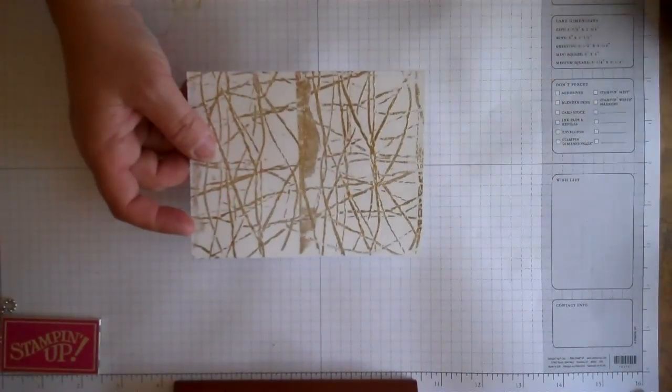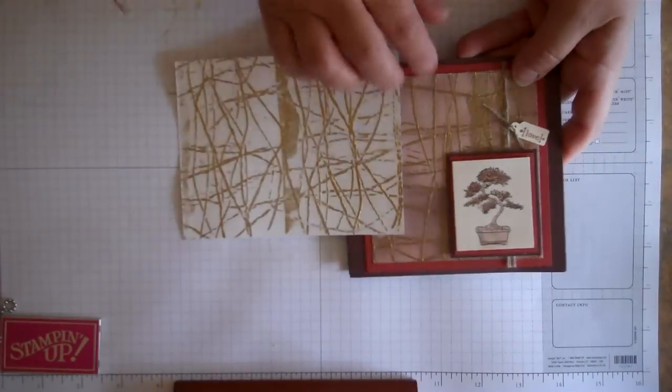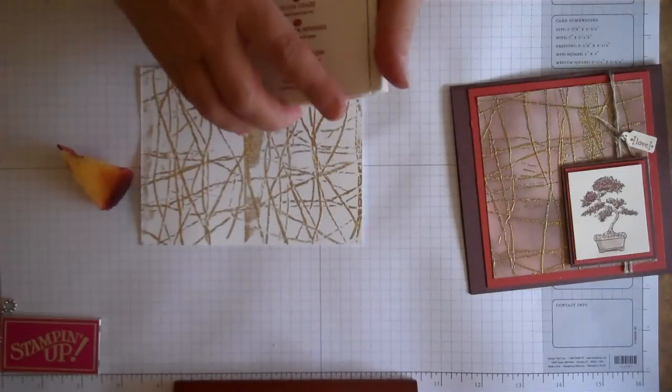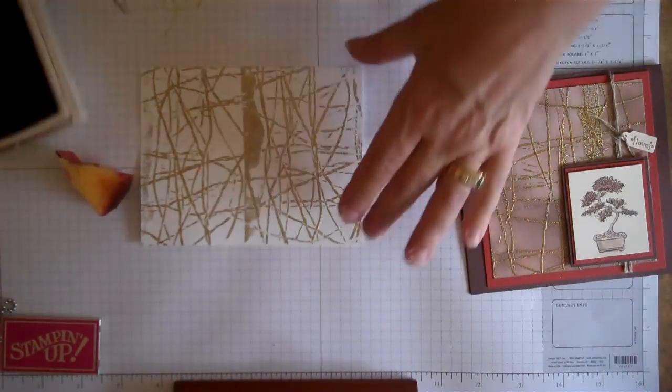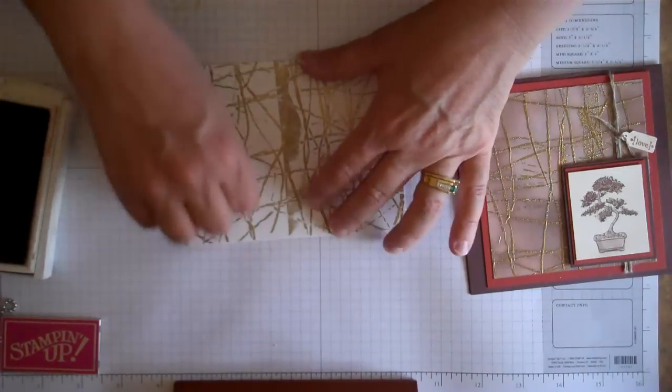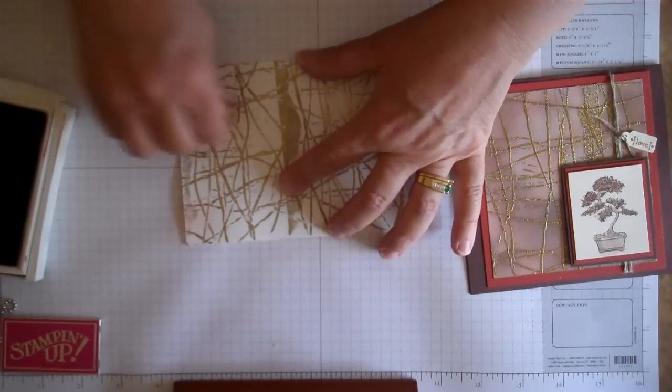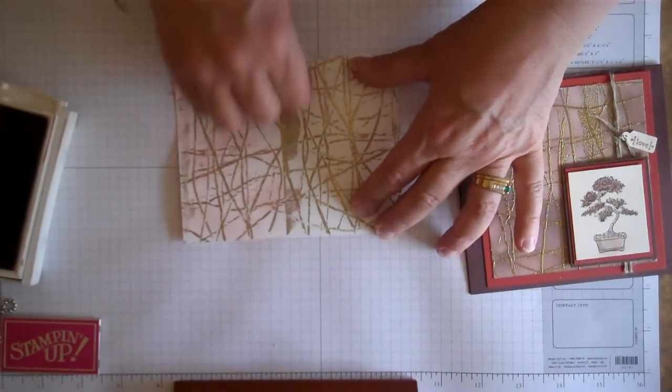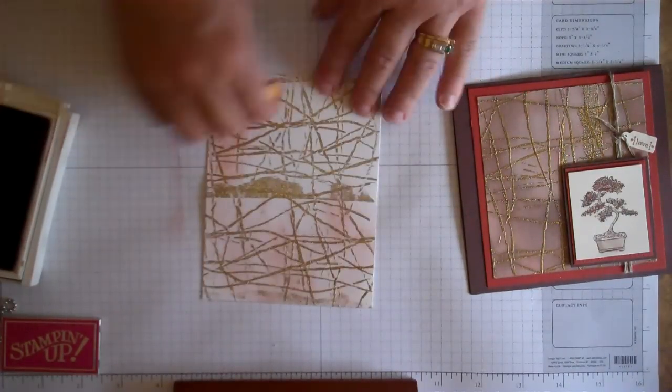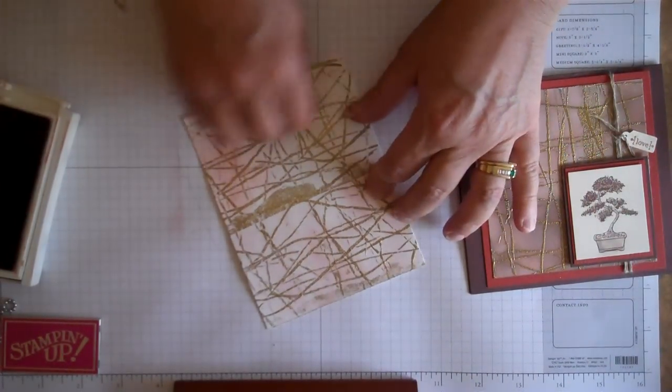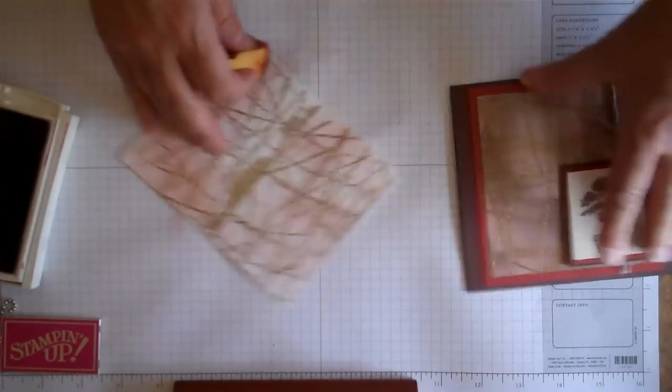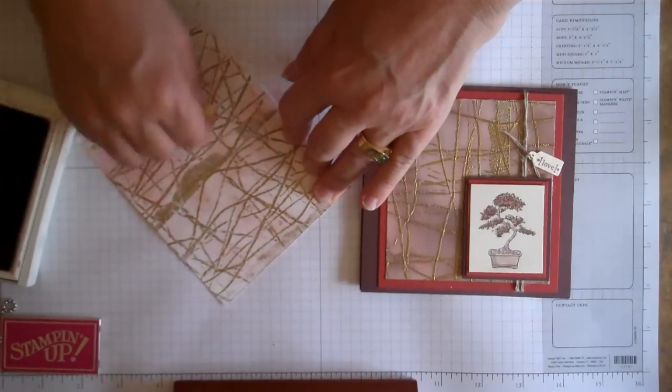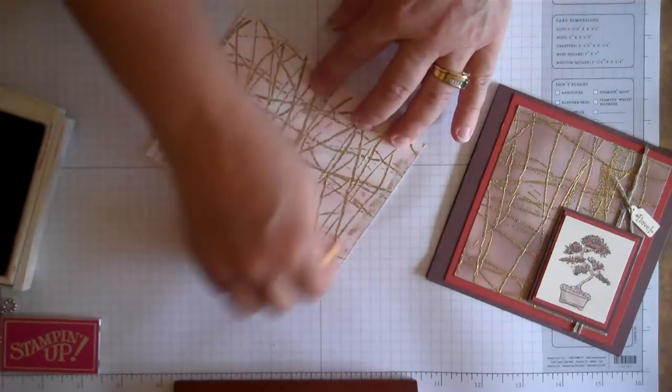But if you don't want to do that, and you want to do what I've done on this card, basically what I've done is I've taken chocolate chip and Cajun craze, that's kind of an orange color, and I've sponged a little color onto the background. It just gives it a little bit different look rather than leaving it with a white background. You can just go ahead and sponge this in with any color that matches the particular card stock that you're working with. I have the Cajun craze and the chocolate chip around it, so that's the colors I've used, and I've just kind of worked it in between.